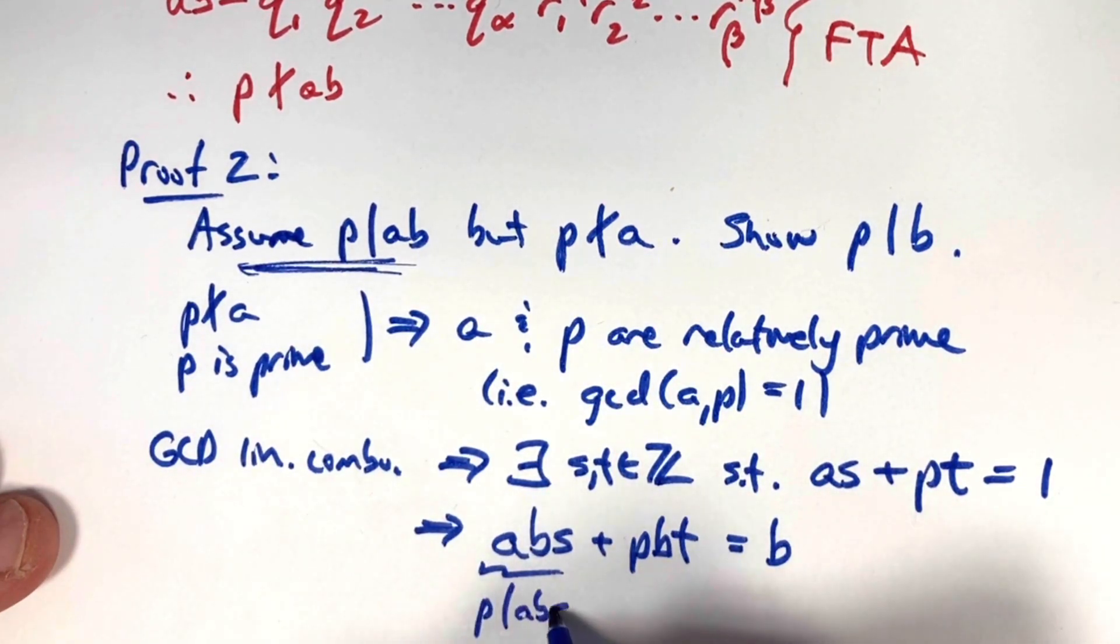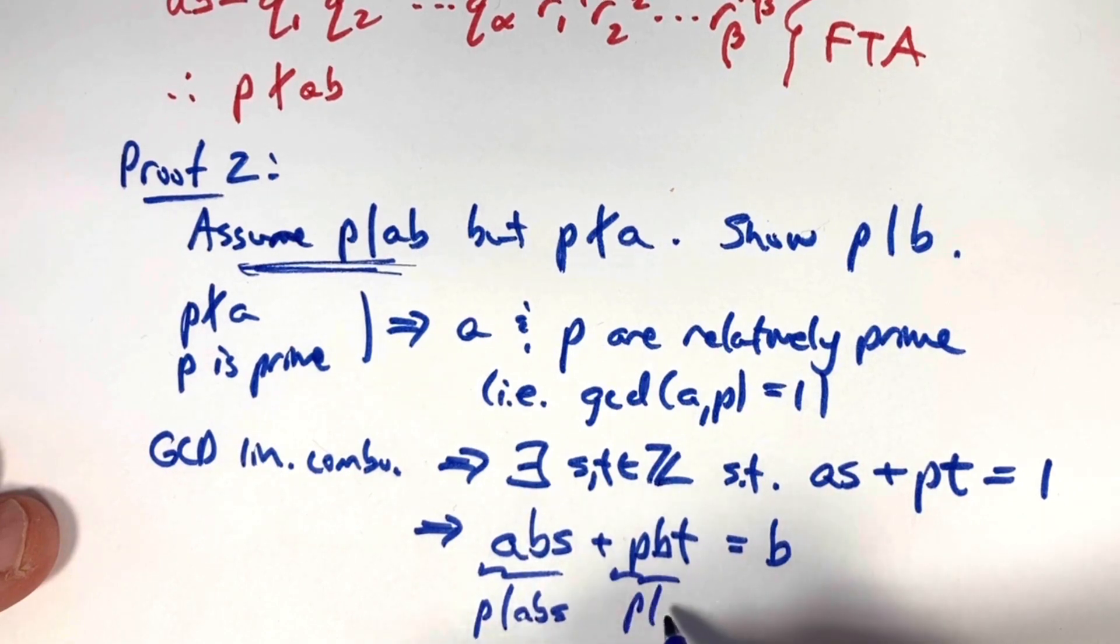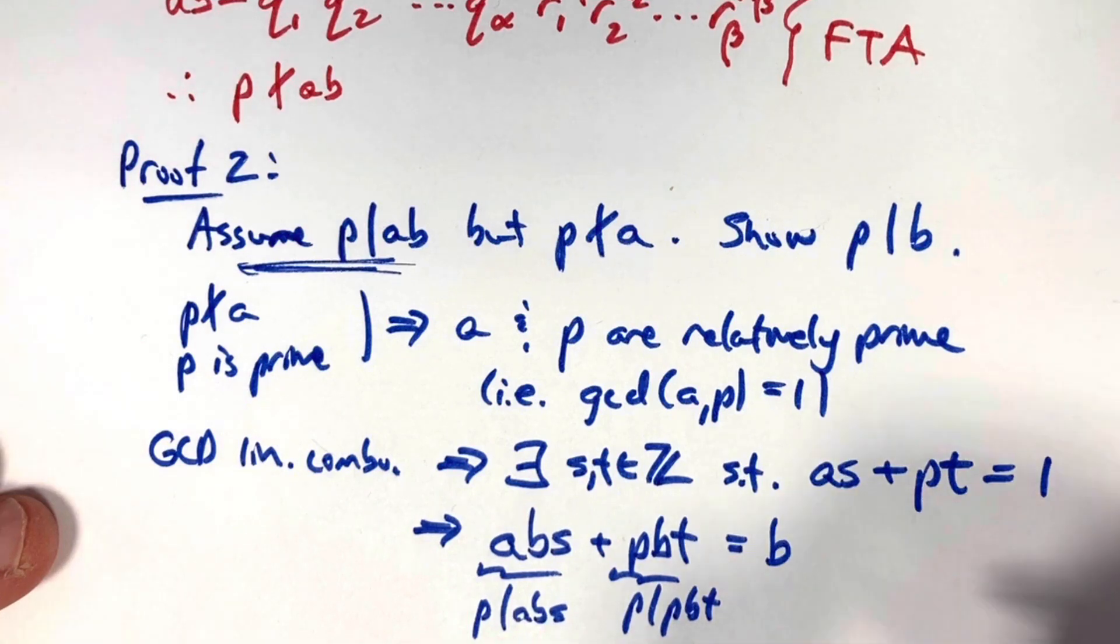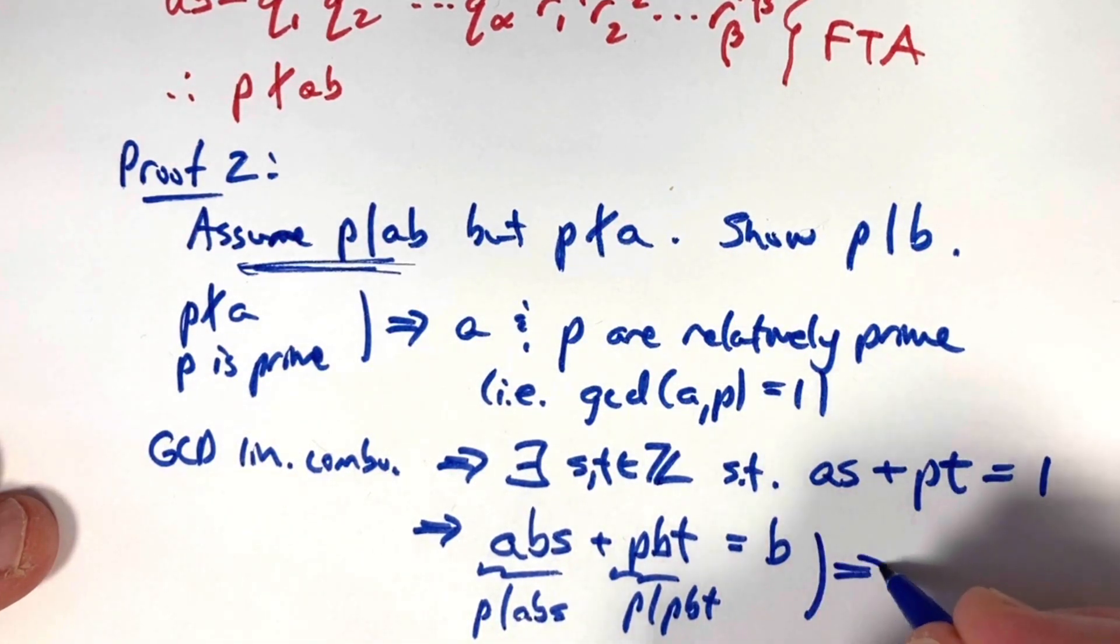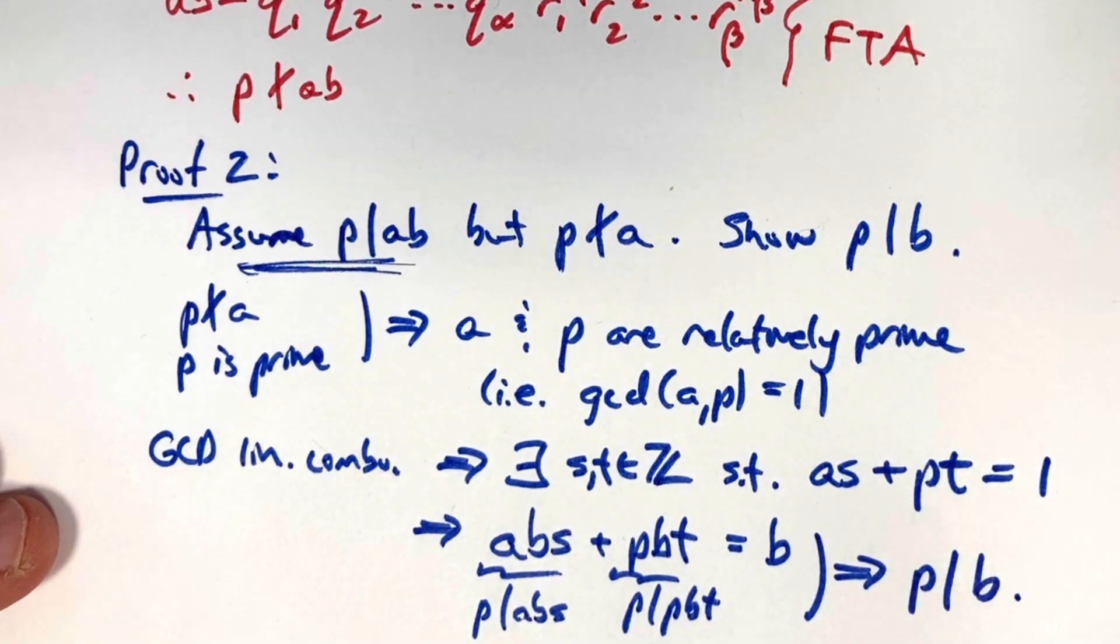p divides a b s, p divides p b t. If p divides two numbers, it will also divide their sum. This implies p divides the sum, p divides b, and we're done. Thanks for watching.